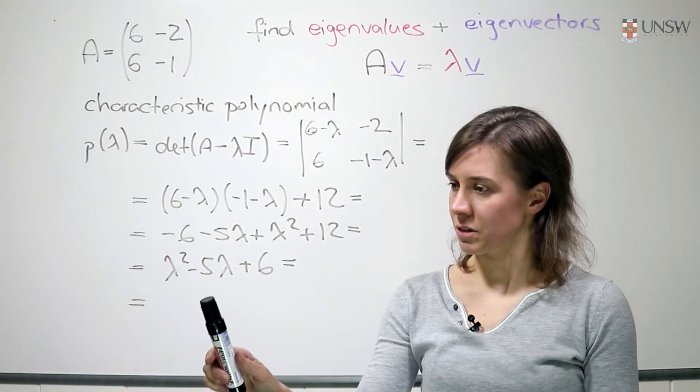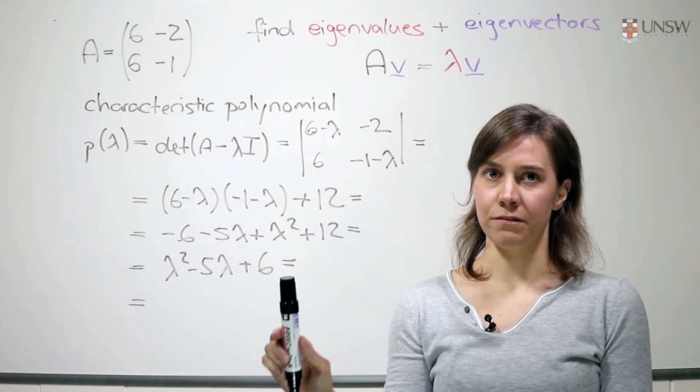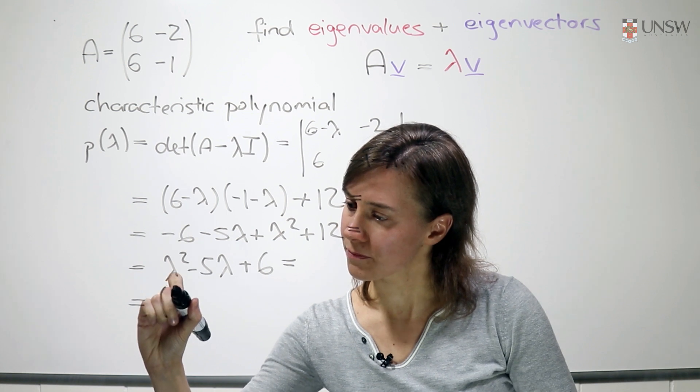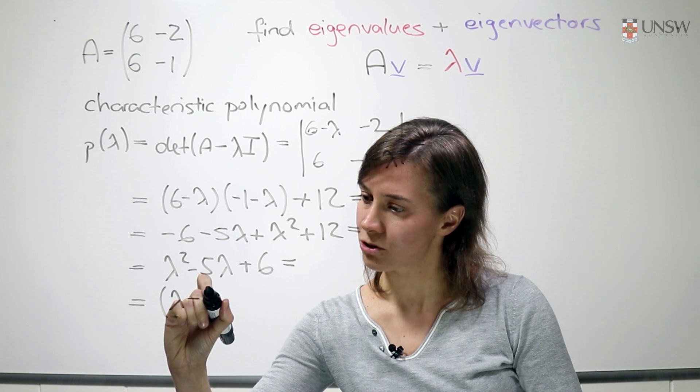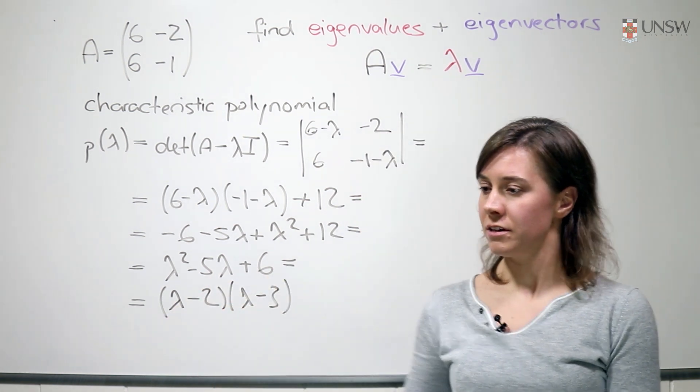This characteristic polynomial lambda squared minus 5 lambda plus 6, and we want to find the zeros of that. And so we see that this factors as lambda minus 2 times lambda minus 3. So this matrix has eigenvalues 2 and 3.